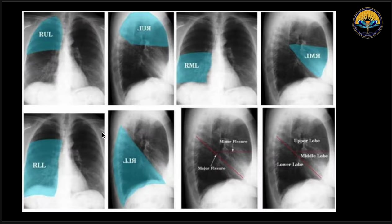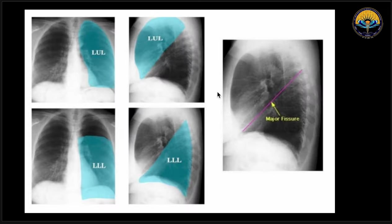Coming to the lobe anatomy, we can see the right upper lobe, the right middle lobe, and the right lower lobe. The minor fissure and major fissure divide the right lung into the right upper lobe, right middle lobe, and right lower lobe. In the left lung, we have the left upper lobe and the left lower lobe, divided on the basis of the major fissure.